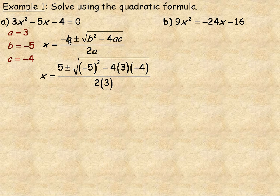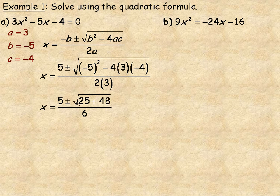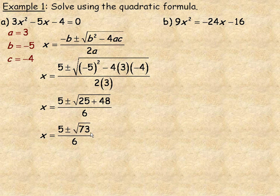When we put negative 5 in for b, we have negative negative 5, which is 5, plus or minus the square root of negative 5 squared — since b is squared — minus 4 times a (which is 3) times c (which is negative 4), all over 2 times 3. Underneath the square root: negative 5 squared is 25, and 4 times 3 times 4 is 48. With a negative times a negative that becomes plus 48, giving us the square root of 73. So the exact solutions are 5 plus or minus the square root of 73 over 6.